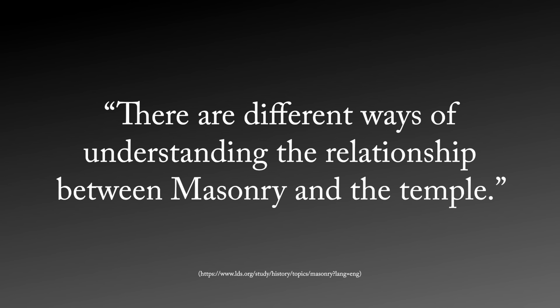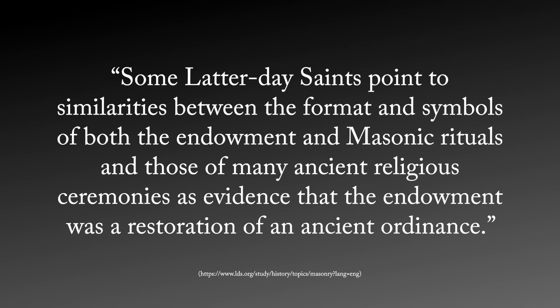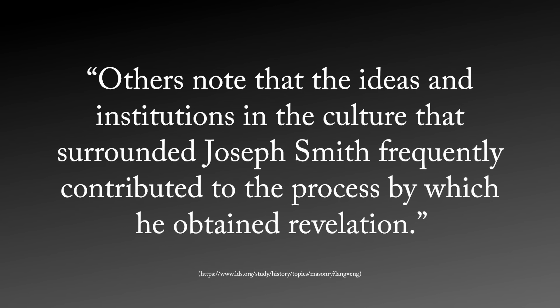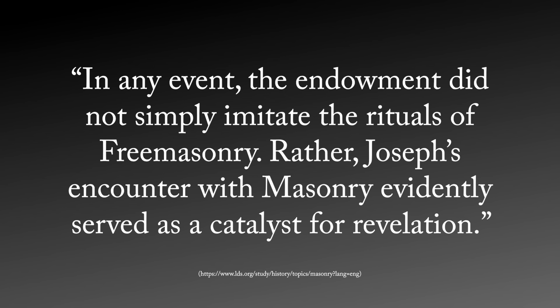Historian Richard Bushman put it this way: 'Joseph often requested revelation about things that caught his attention. He had a green thumb for growing ideas from tiny seeds. Masonic rites seem to have been one more provocation. Intrigued by the Masonic rites, Joseph turned the material to his own use. The Masonic elements that appeared in the temple endowment were embedded in a distinctive context — the creation instead of the Temple of Solomon, exaltation rather than fraternity, God and Christ, not the worshipful master. Temple covenants bound people to God rather than to each other. At the end, the participants entered symbolically into the presence of God.'